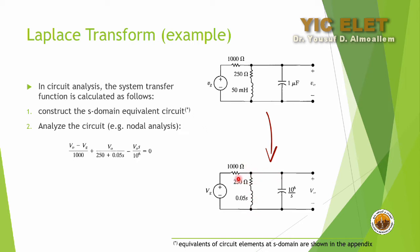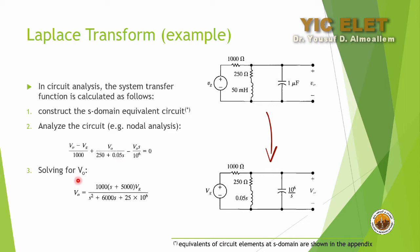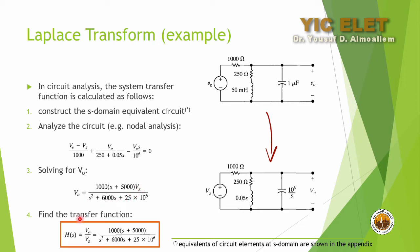Continuing the nodal analysis: v_out over (250 + 0.05s), then v_out over the capacitor impedance which becomes 10^6 over s in the denominator, all set equal to zero. Solving for v_out, we collect all terms multiplied by v_out on one side and all terms with v_g on the other. After dividing by v_g, we obtain the transfer function, which will be used in simulation.